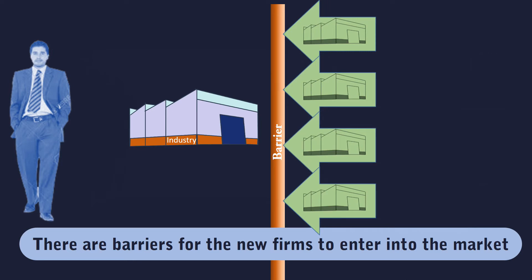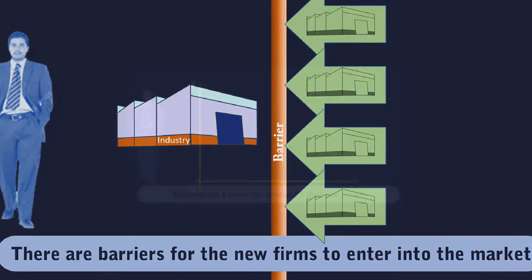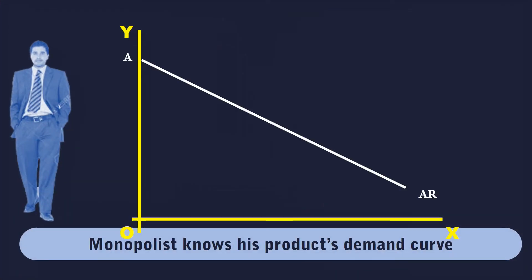Since there is no rival in the market, monopolist knows his product's demand curve. It slopes downward from left to right. It is the industry demand curve.